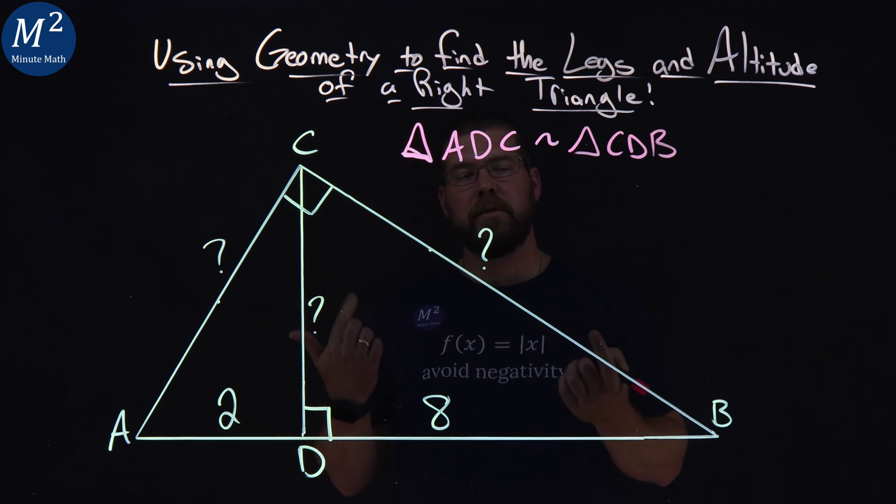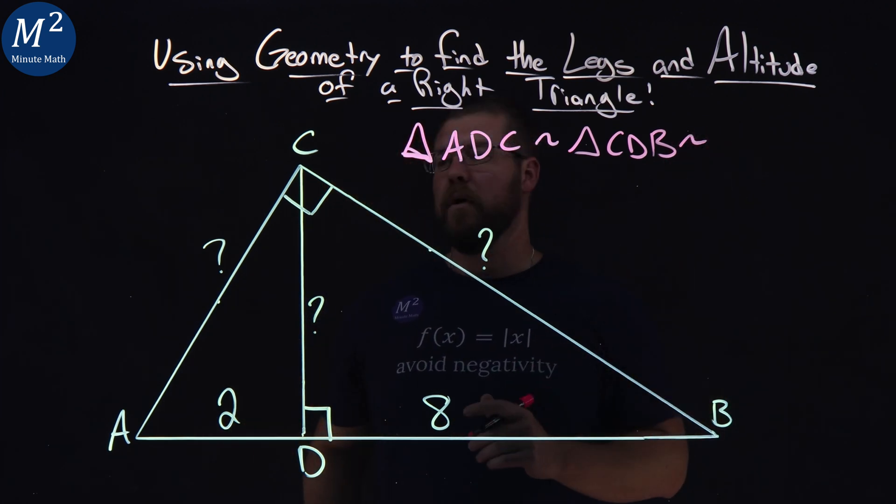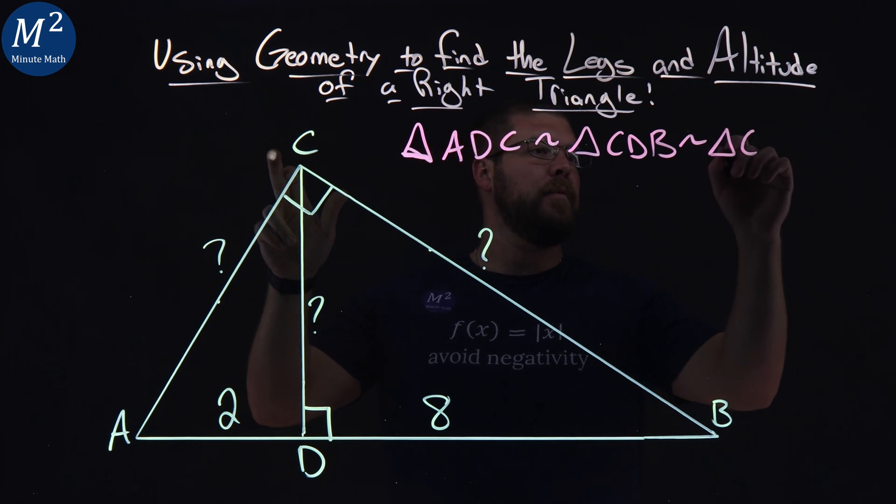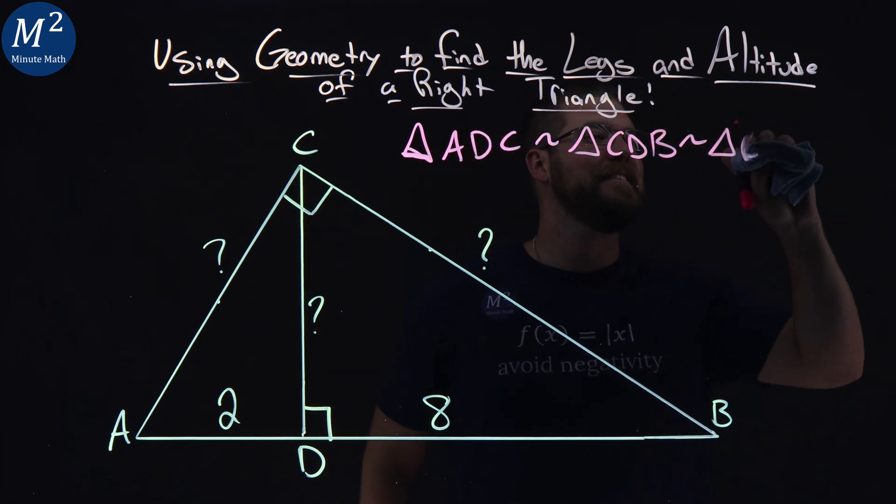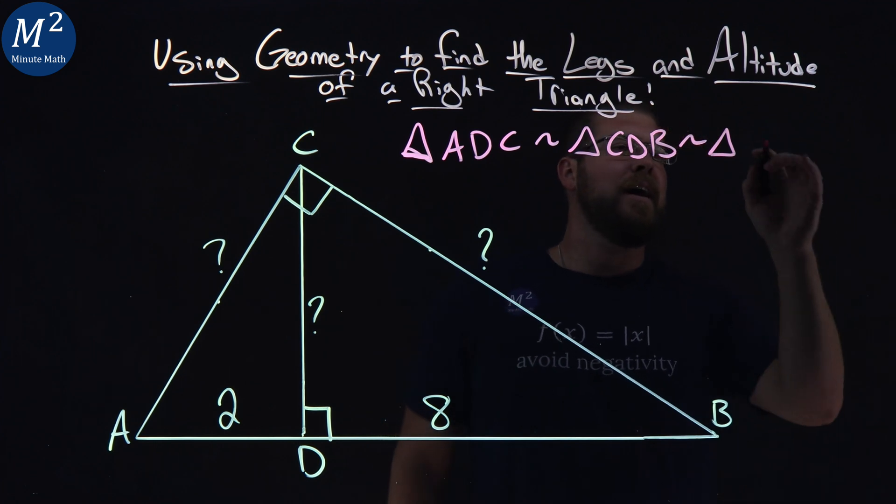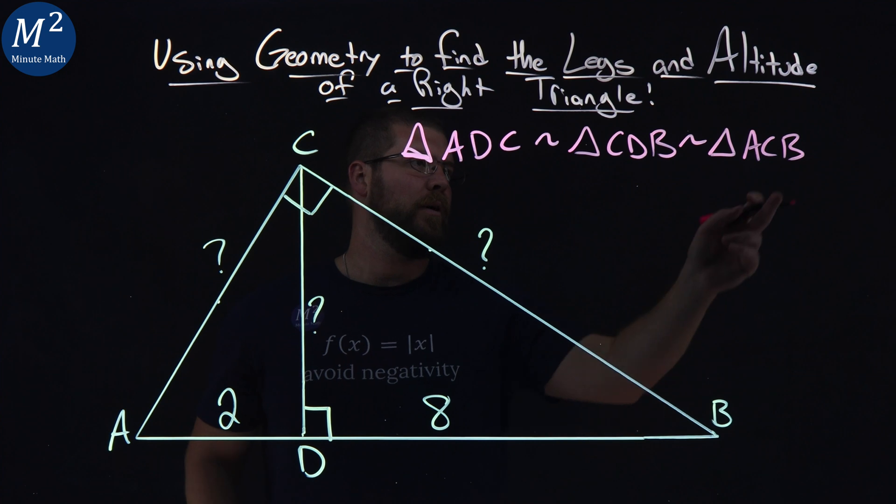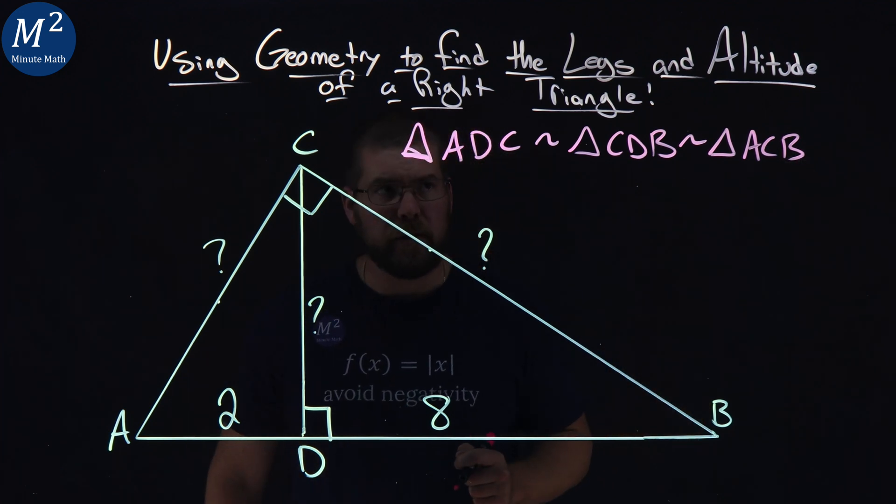And we're going to do the same thing here with the larger one, AC being the small leg. AC, and then B with the hypotenuse being B back to A being the hypotenuse.